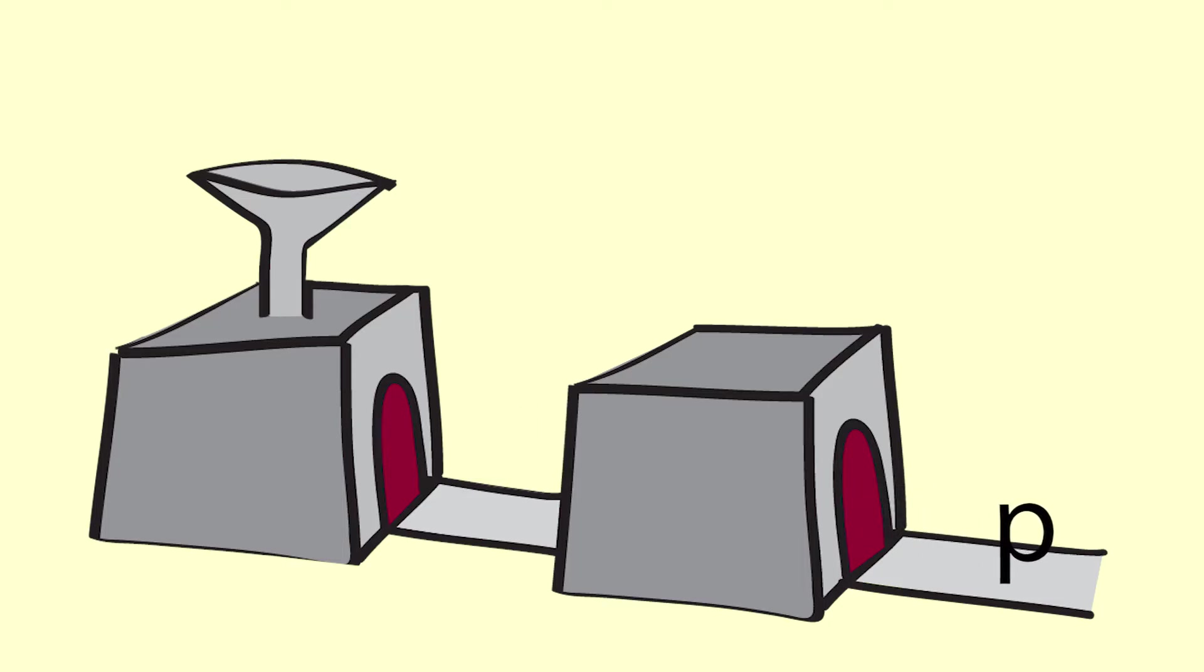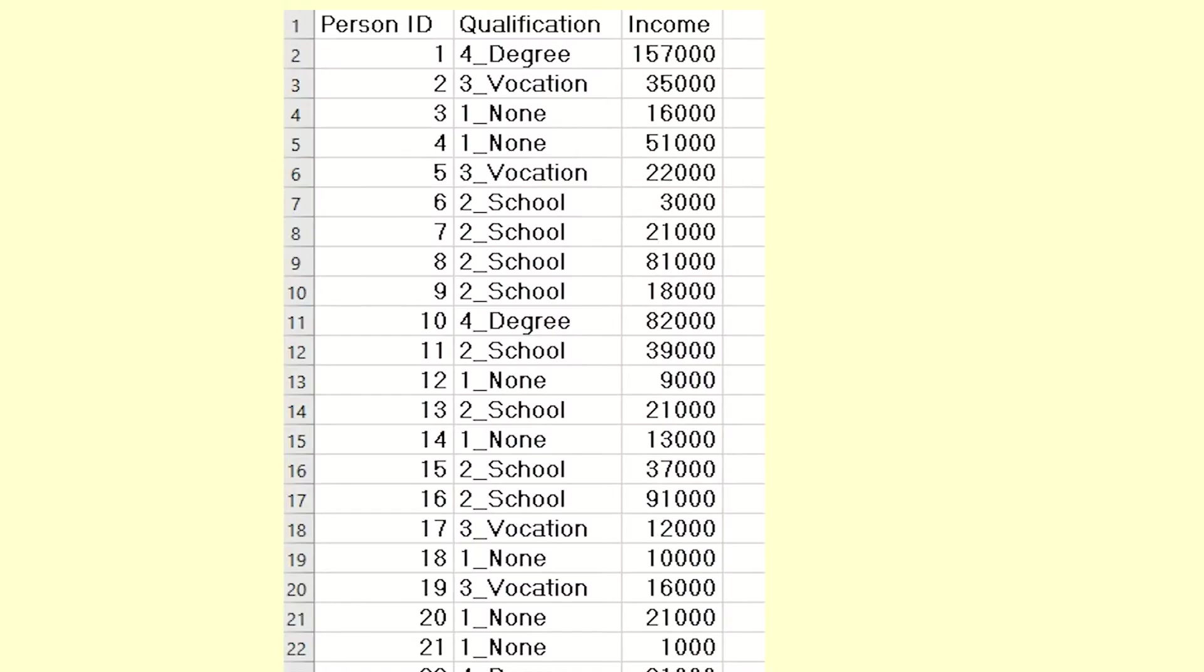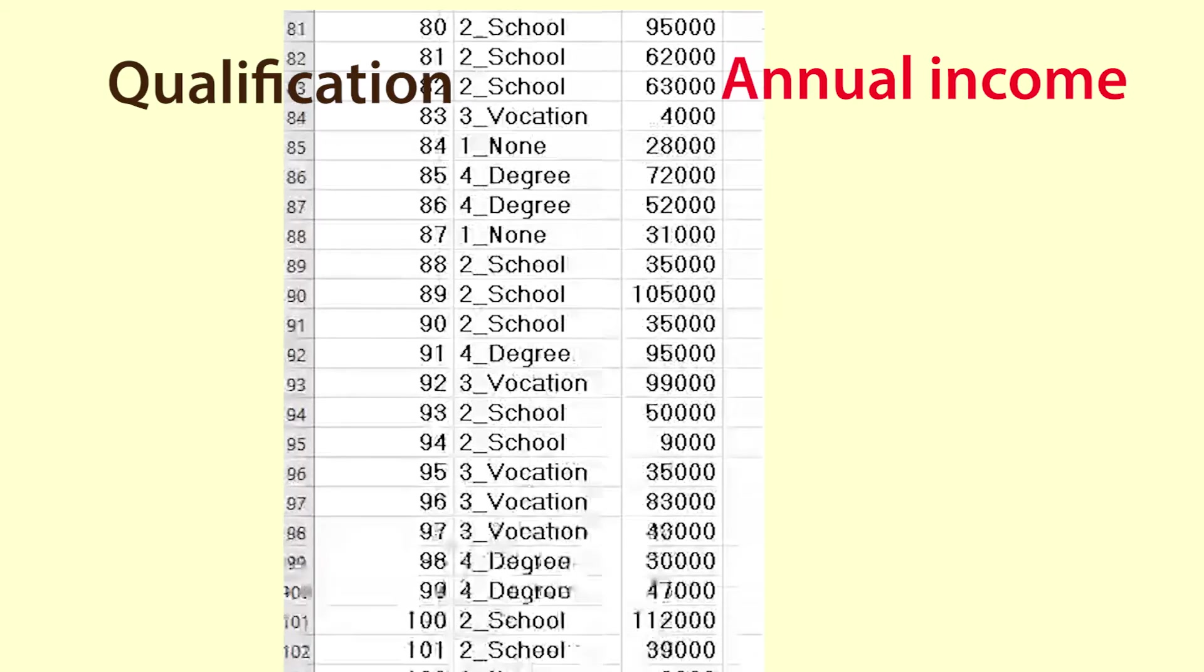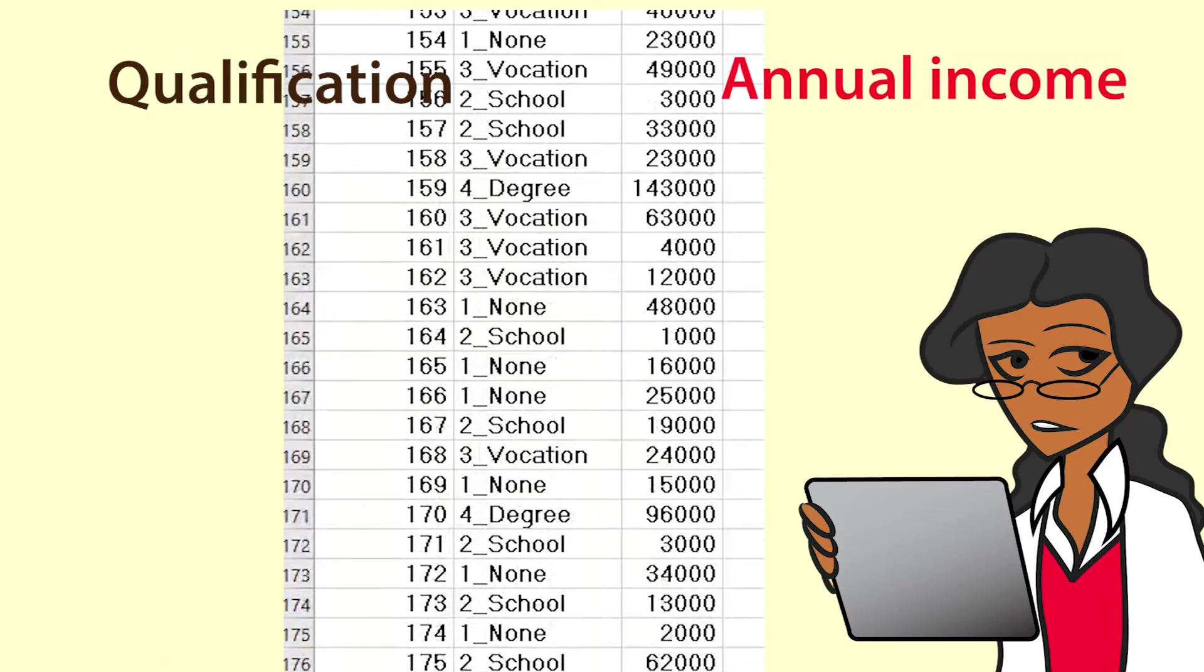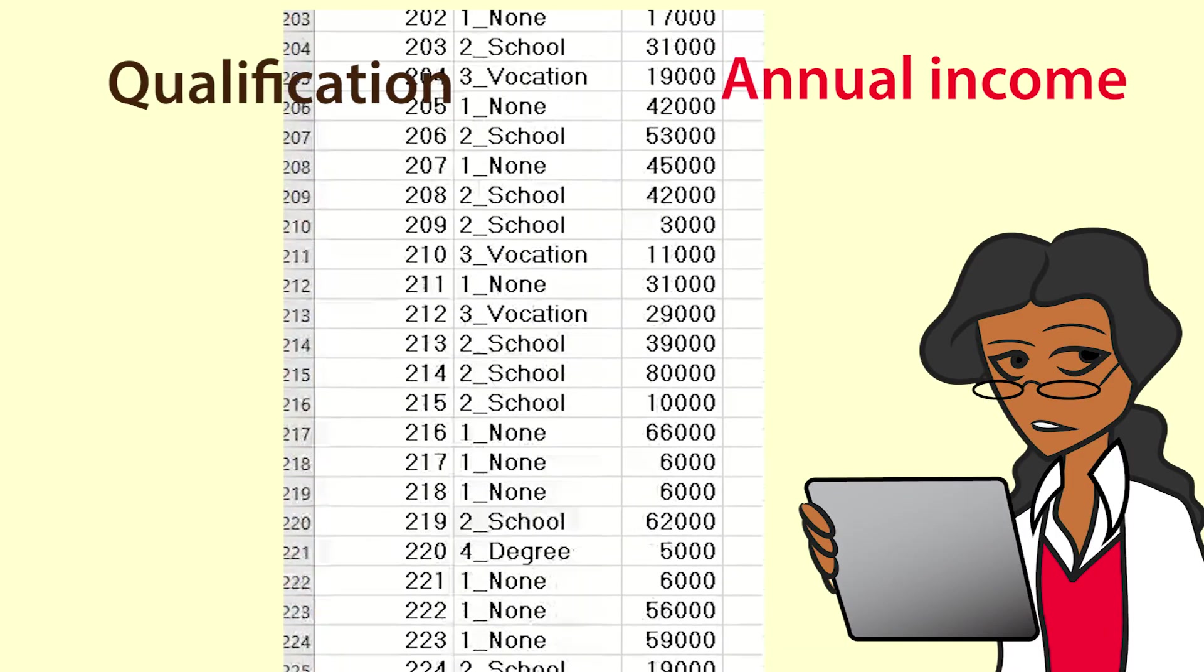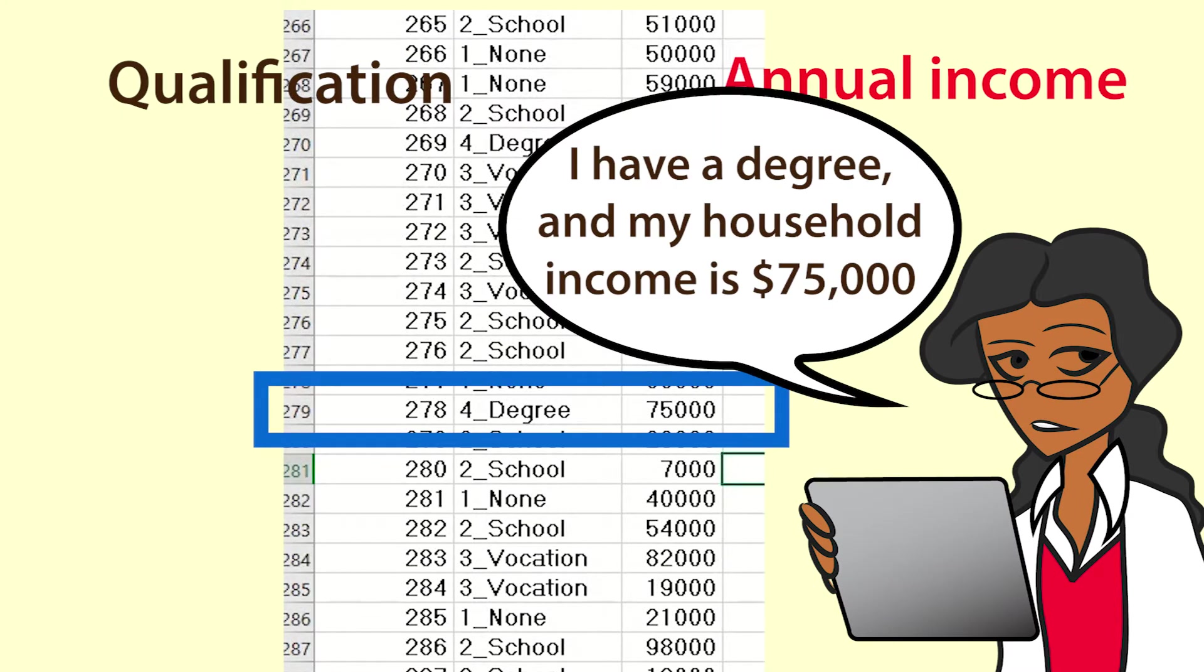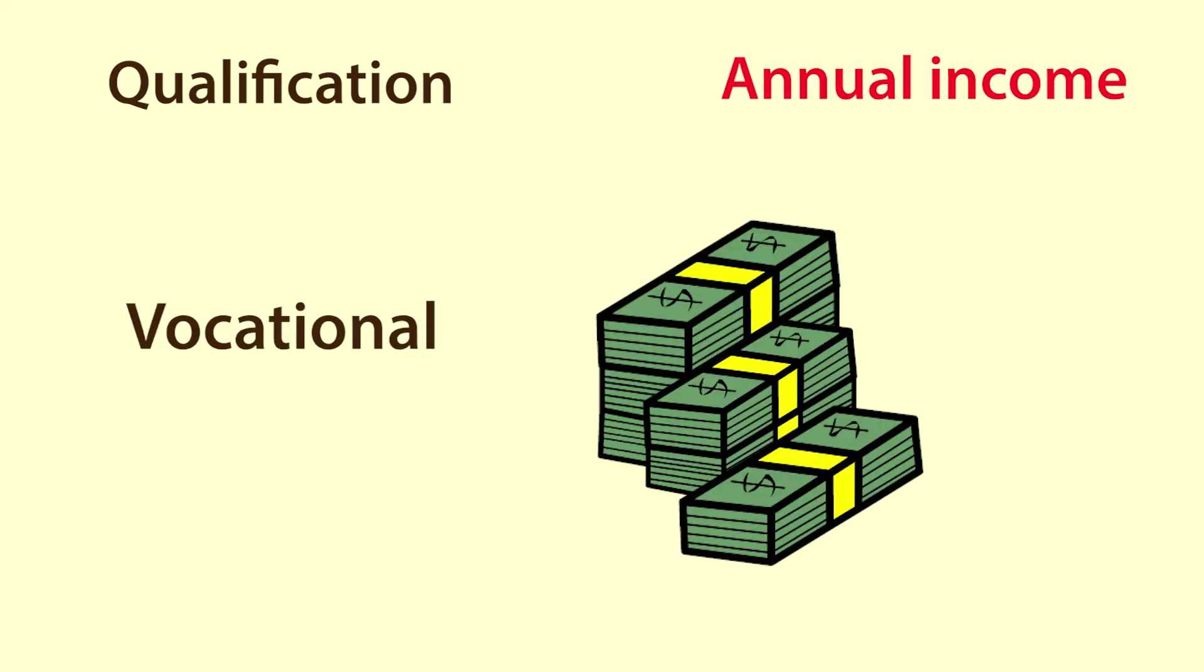Here is an example based on real data about people's annual incomes and qualifications. For each person, we have data about their level of qualification and their annual household income. We would expect there to be a difference in income depending on level of qualification.